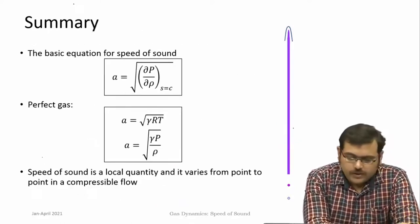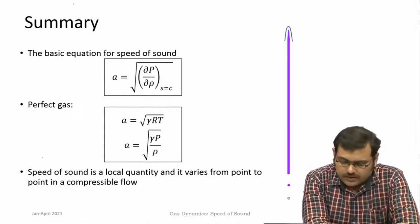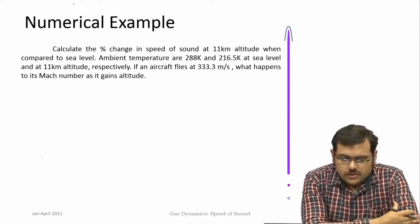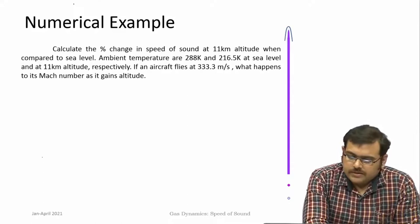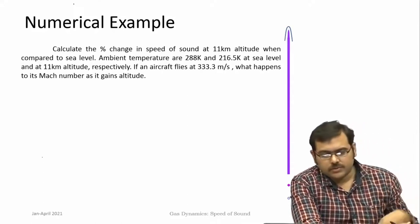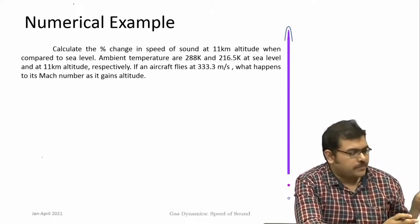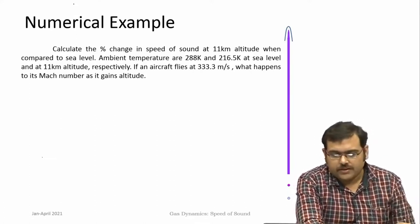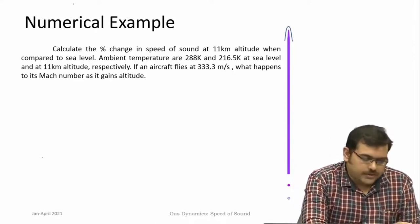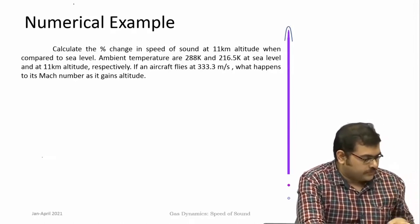Let us do a simple numerical example based on the speed of sound. Calculate the percentage change in speed of sound at 11 km altitude compared to sea level. Ambient temperatures are 288 K at sea level and 216.5 K at 11 km altitude. If an aircraft flies at 333.3 m/s, what happens to its Mach number as it gains altitude?